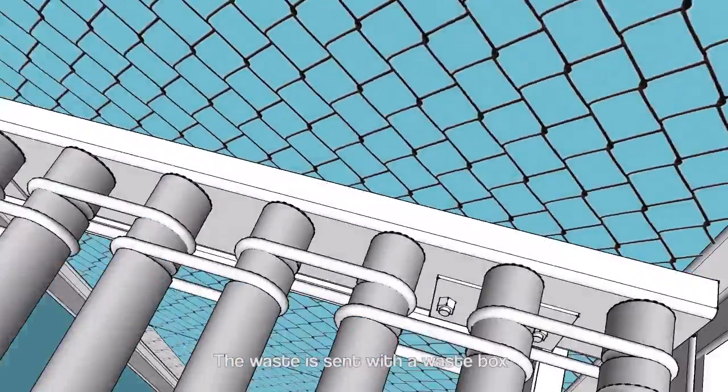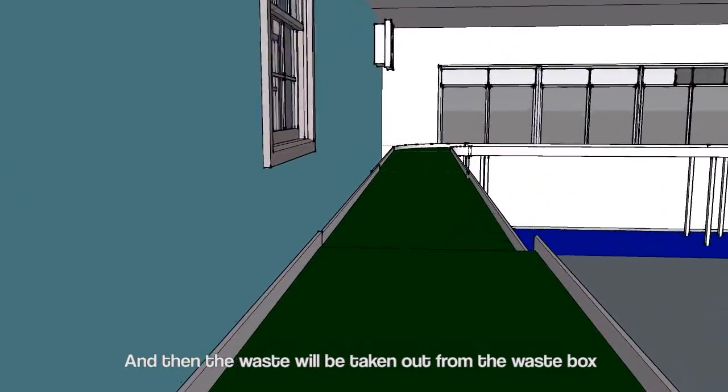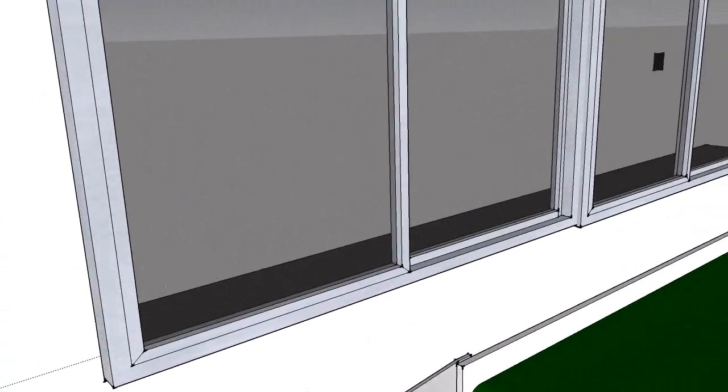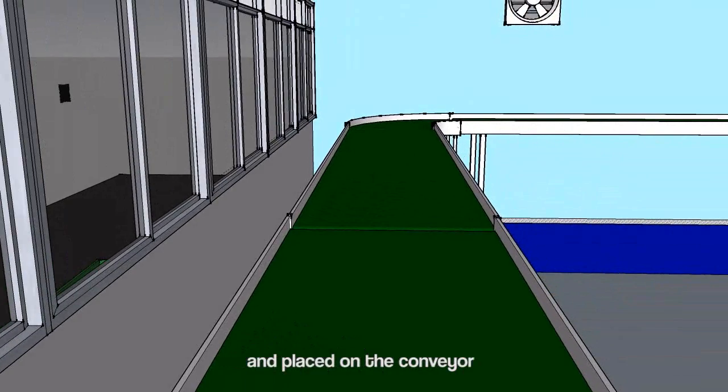The waste is sent to the second floor, which is a segregation zone, by the lift. The waste is sent with a waste box, and then the waste will be taken out from the waste box and placed on the conveyor.